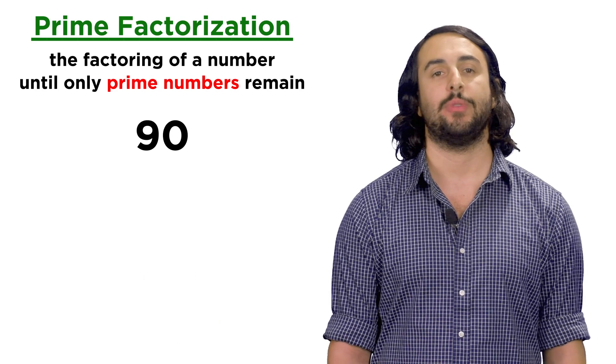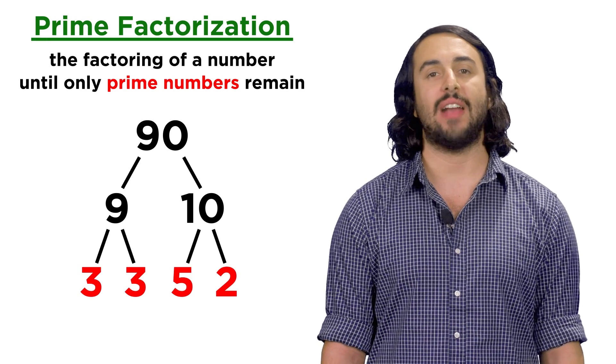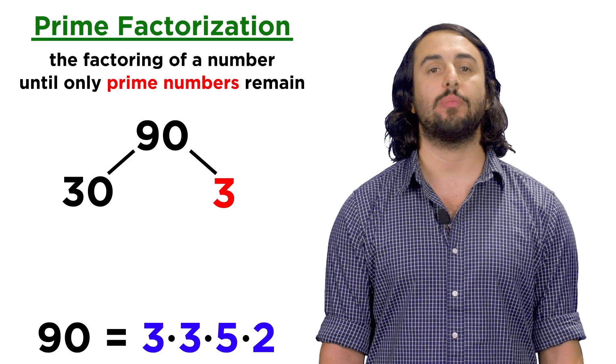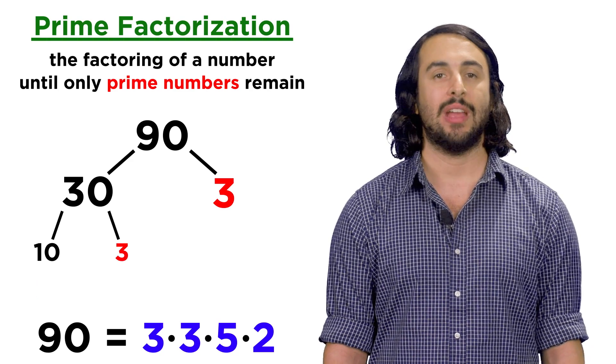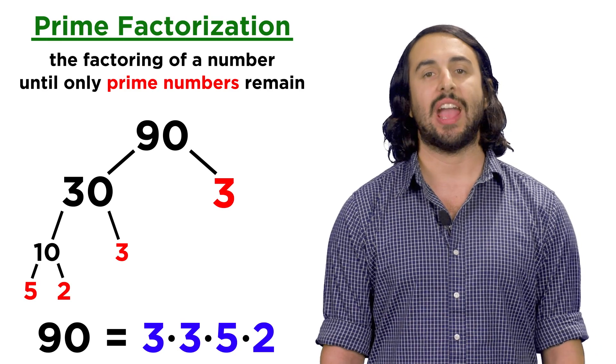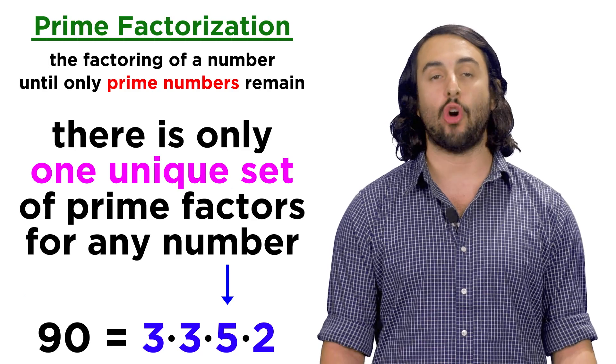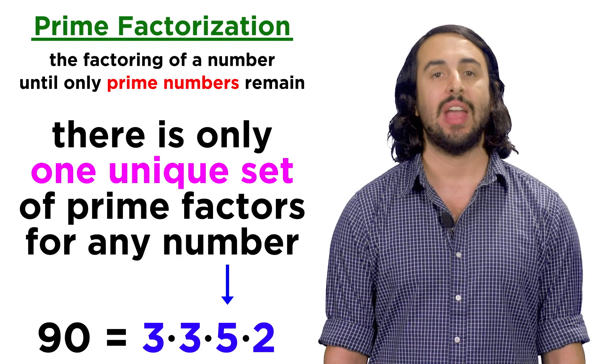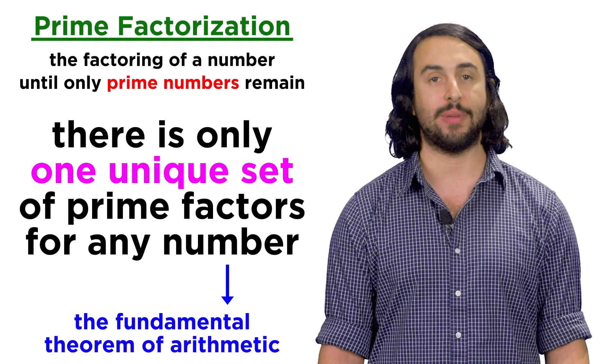Let's try ninety. First we can get nine times ten, break that into three times three, and five times two, and there we go. What if instead we started with thirty times three? Thirty becomes ten times three, ten becomes five times two, and we end up with the same thing anyway. This is because there is only one unique set of prime factors for any number, and this important notion is called the fundamental theorem of arithmetic.